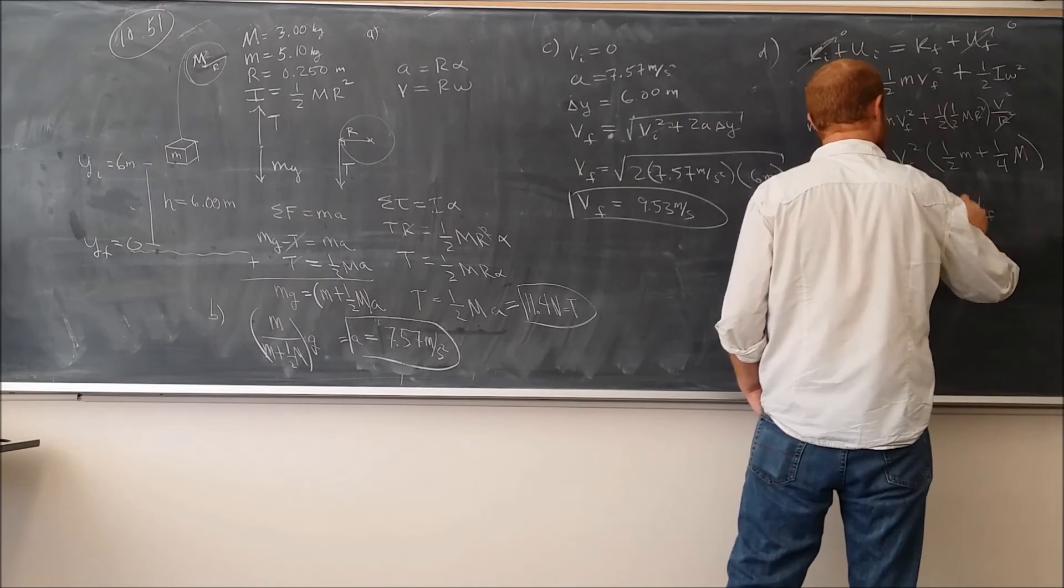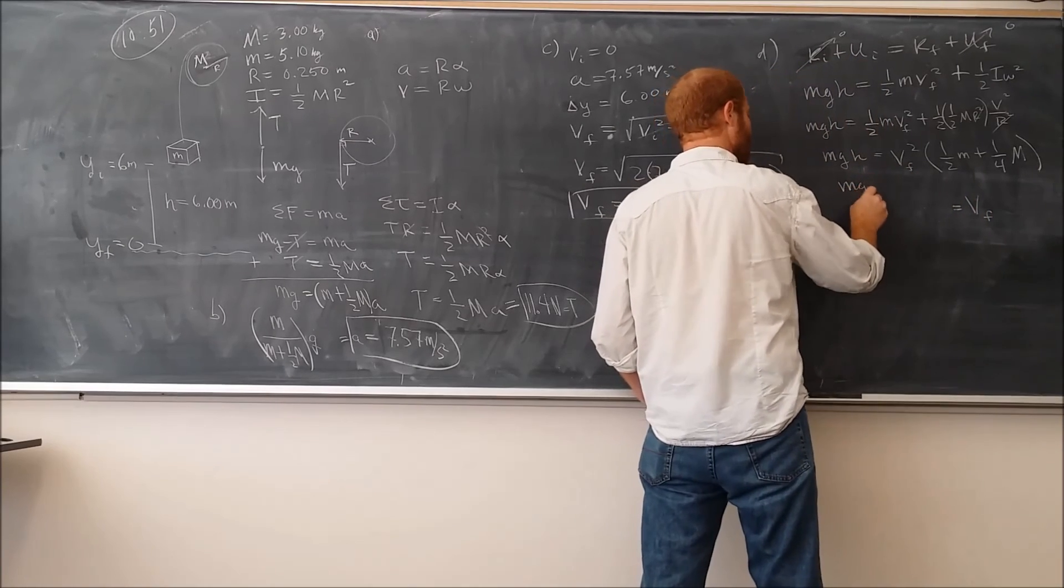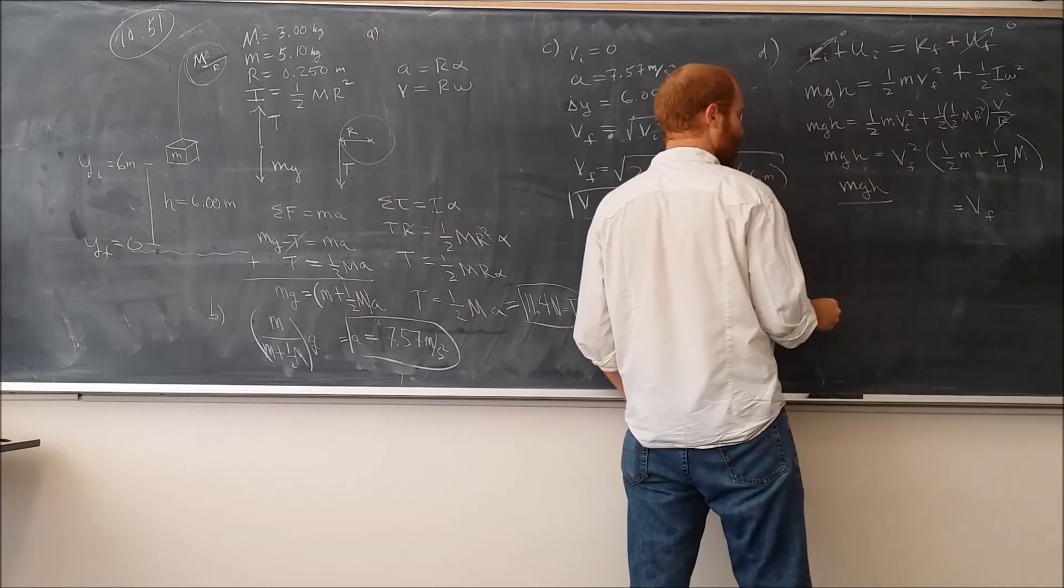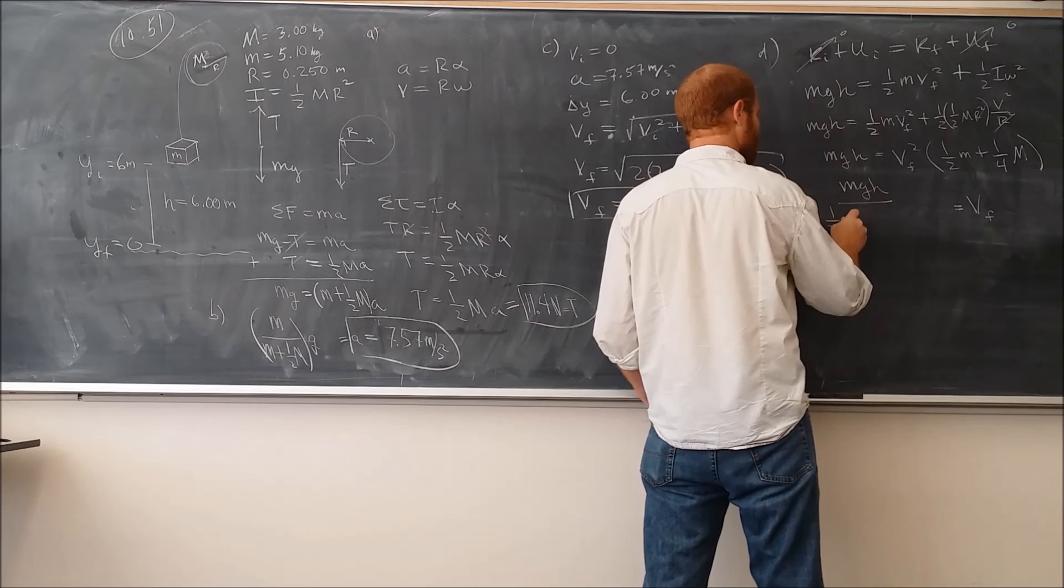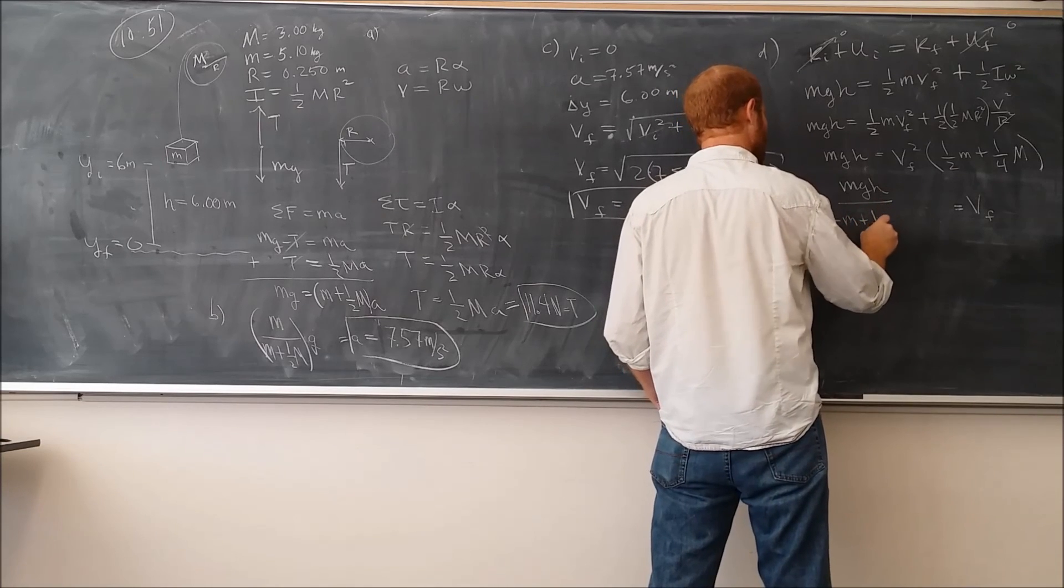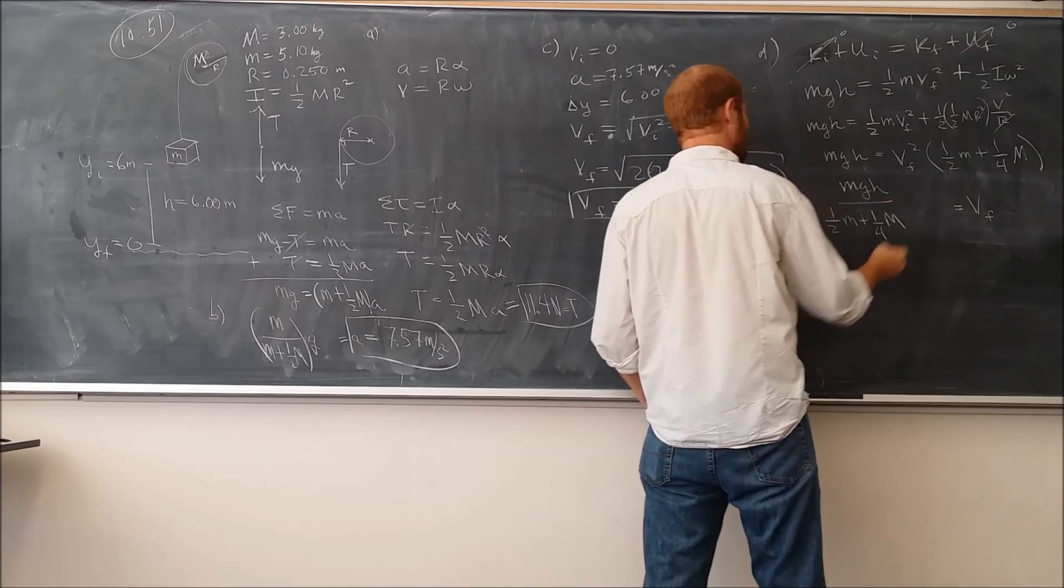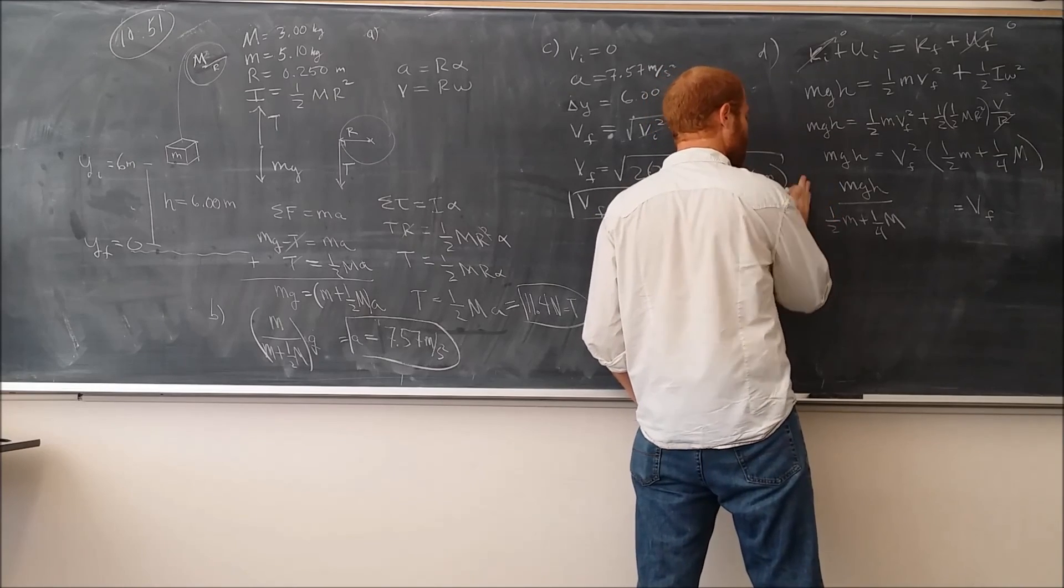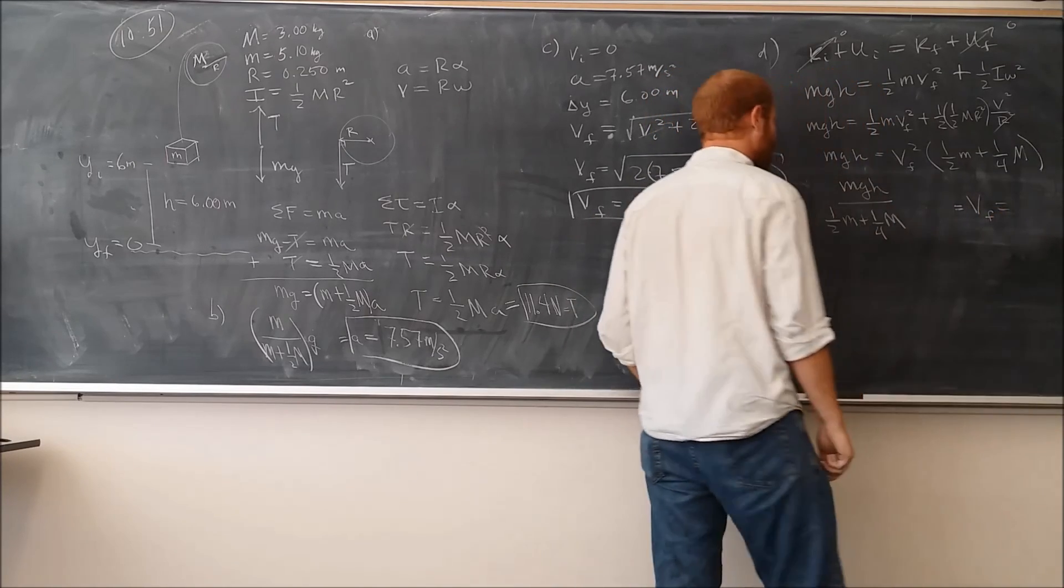So we get that VF is equal to the square root of 2mgh over m plus one-half M. And if you calculate this, you'll get the same answer.